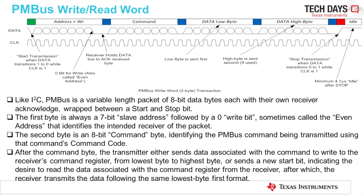This is a typical PMBus write and read word. Like I2C, PMBus is a variable-length packet of 8-bit data bytes, each with their own receiver acknowledge, wrapped between a start and a stop bit. The first byte is always a 7-bit slave address followed by a zero write bit — sometimes called the even address — that identifies the intended receiver of the packet. The second byte is an 8-bit command byte identifying the PMBus command being transmitted using the command's command code. After the command byte, the transmitter either sends data associated with the command to write to the receiver's command register from lowest byte to highest byte, or sends a new start bit indicating the desire to read the data from the receiver, after which the receiver transmits the data following the same lowest-byte-first format.